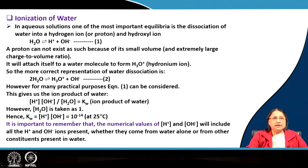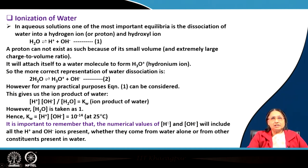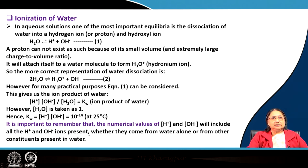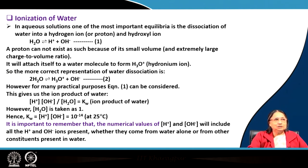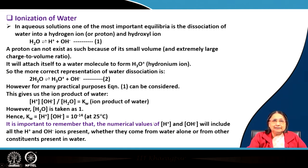It is important to remember that the numerical values of H⁺ and OH⁻ ion concentrations in a system include all contributions — whether they come from water alone or from other constituents present in water. This is very important. Using the seesaw analogy: if H⁺ concentration goes up, OH⁻ must go down, but both values include contributions from all species in solution, not just water itself.